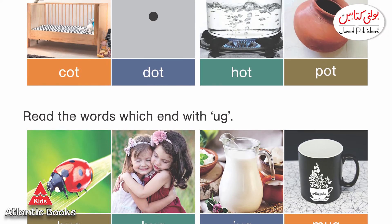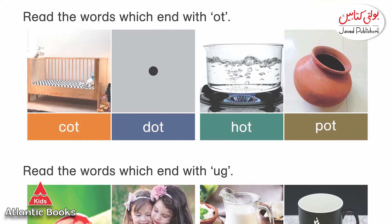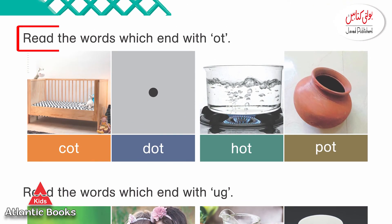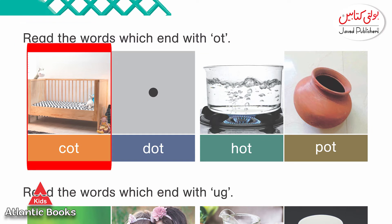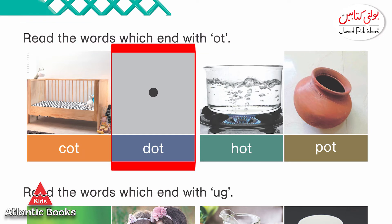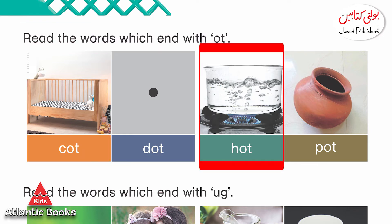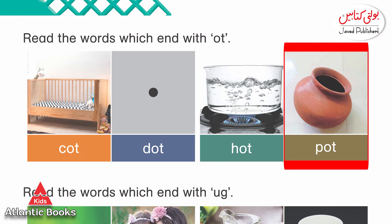We go to page number 9. We have a word combination of O and T, and the sounds are 'ot'. The words are: cot, hot, pot.